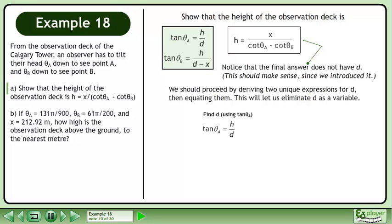Find d using the equation tan theta A equals h over d. Now find d using the equation tan theta B equals h over d minus x.